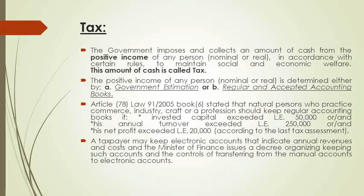The government or the state imposes and collects an amount of cash from the positive income of any person to maintain social and economic welfare. The amount collected is called the tax, which differs from penalties. Penalties is cash money collected by the government for irregular or illegal acts.